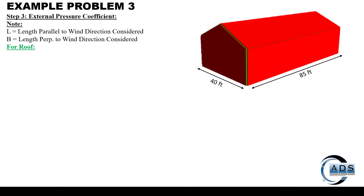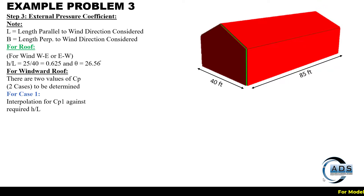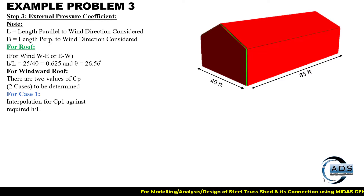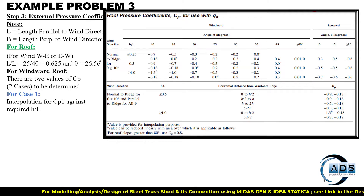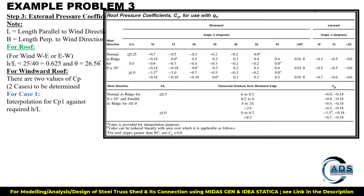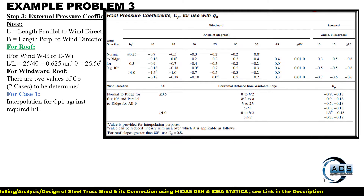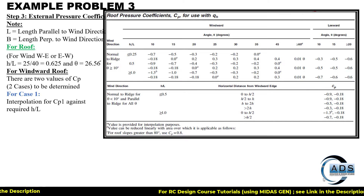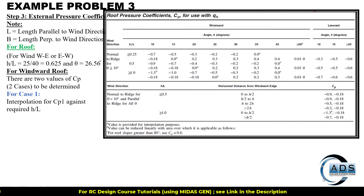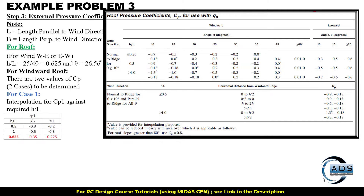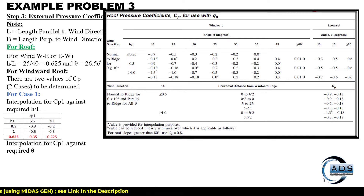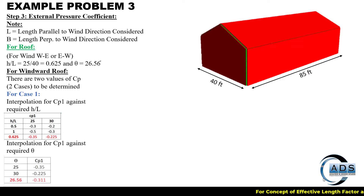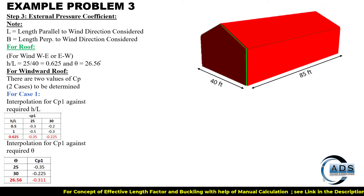For the roof, Cp values can be calculated using the table in which we require the h over L ratio and the roof angle, which is 26.56 degrees. The table has two sections: windward and leeward. Since we have both cases for this problem, we incorporate both. For the windward part, Cp has two cases. For case 1, interpolation for Cp1 is done against the required h over L values, and then interpolation against required theta gives specific values.